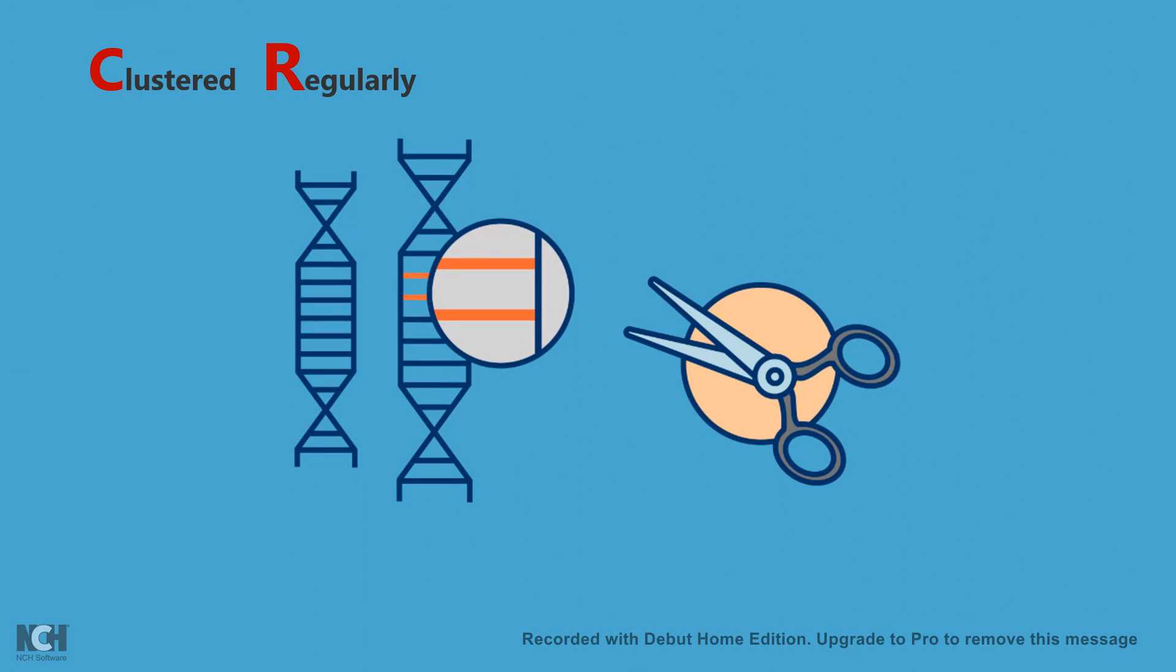CRISPR stands for clustered regularly interspaced short palindromic repeats. A mouthful term, right? CRISPR is actually a sequence information which is present in bacterial genome and it is regularly interspersed and repetitive in nature. That's why it's called palindromic repeats.